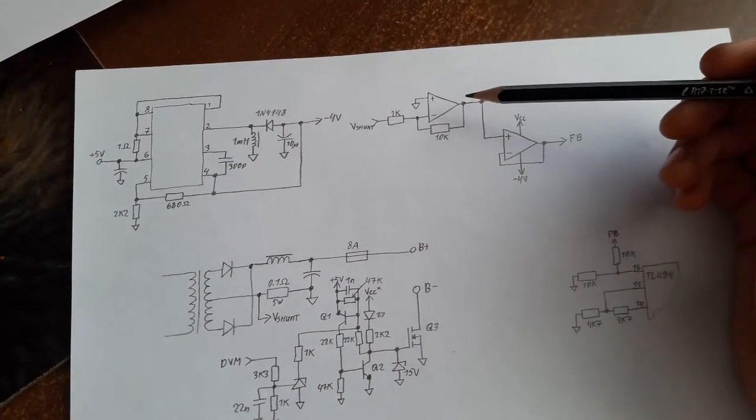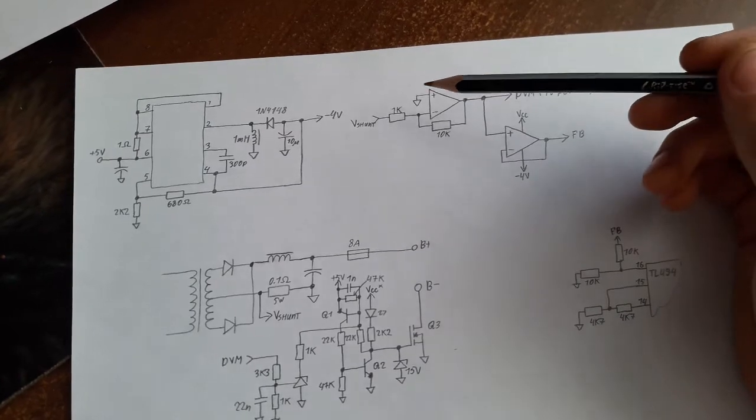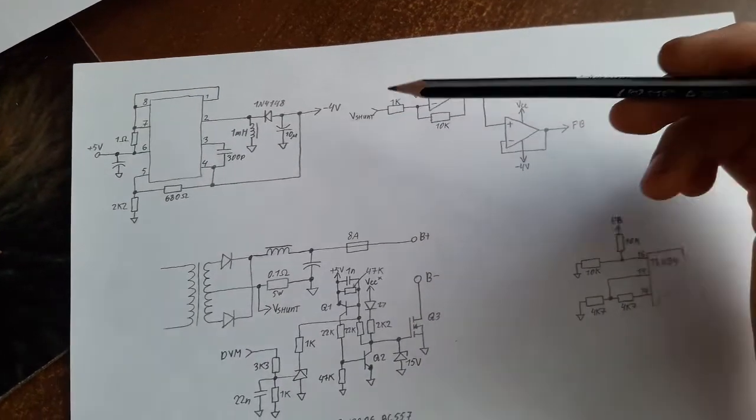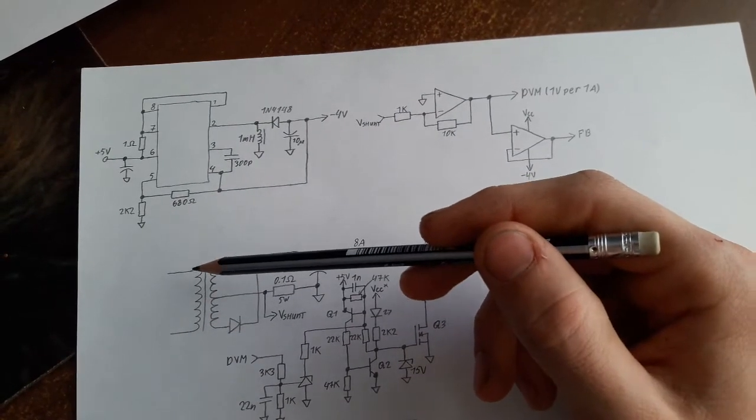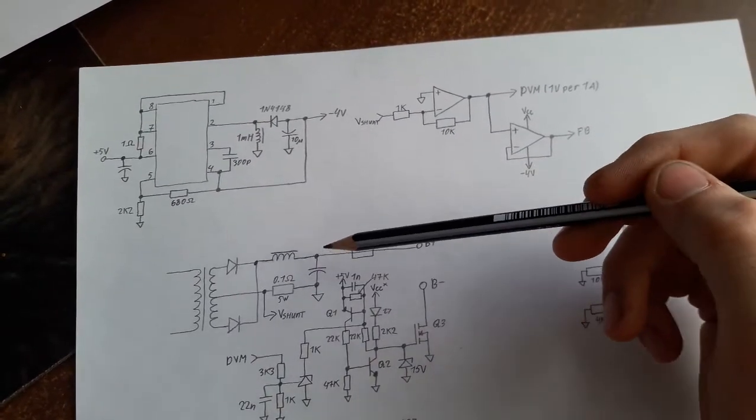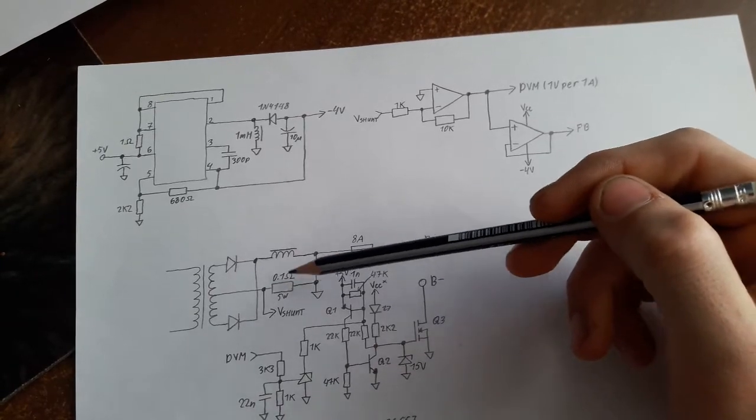First stage is just an inverting amplifier. It picks the voltage of the shunt, which is right here, as you can see. Here is your transformer. Primary of it. Secondary. Your choke. And you can see where the shunt is.